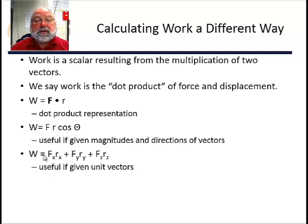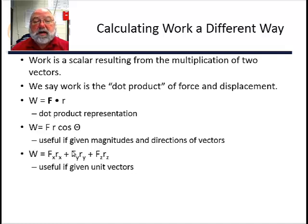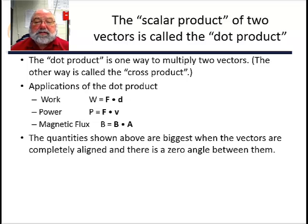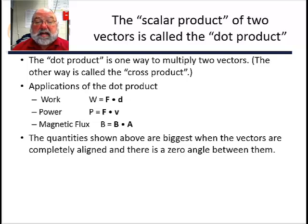The dot product form is the x-component of the force times the x-component of the displacement, plus the y-component of the force times the y-component of the displacement. That gives you work — so there are two ways of coming up with work. Some other places where we'll see the dot product: when we calculate power a little later in this unit, it's the force dotted with the velocity.